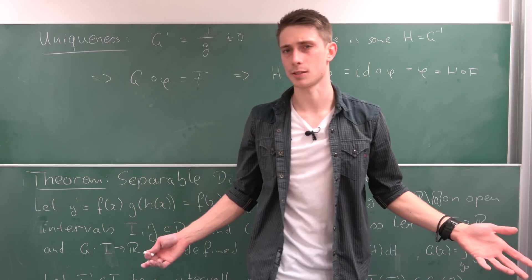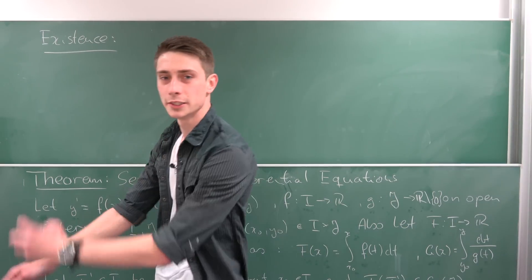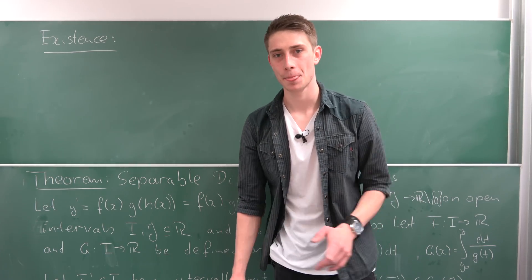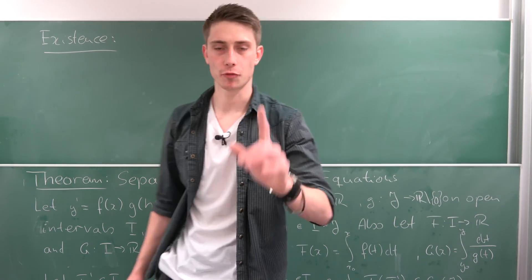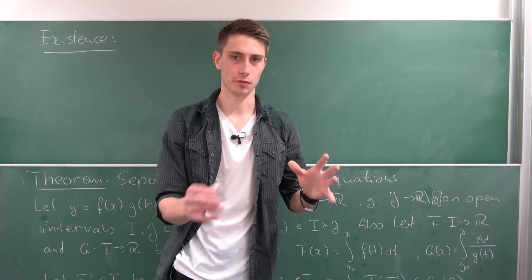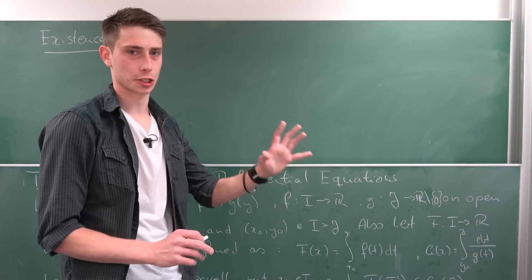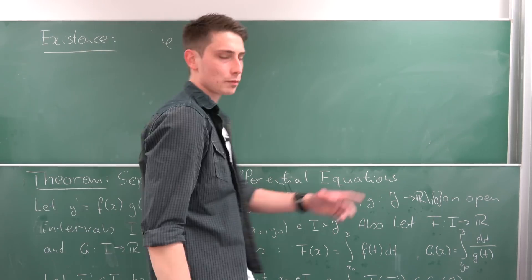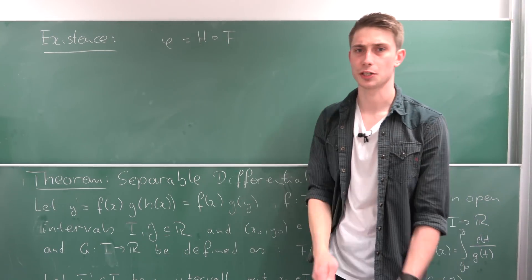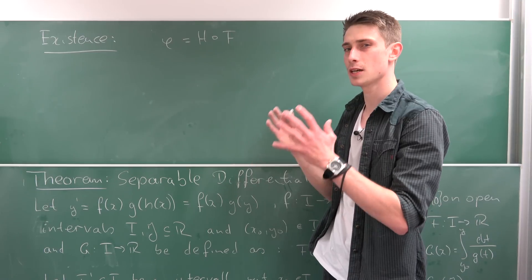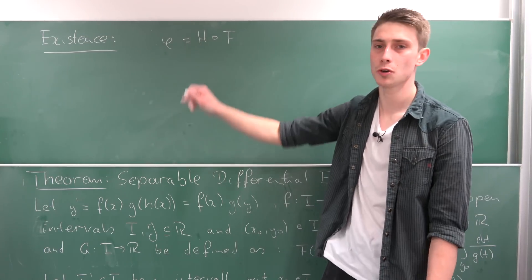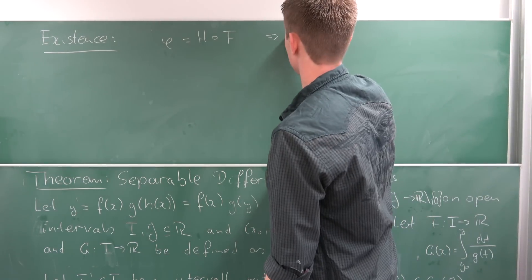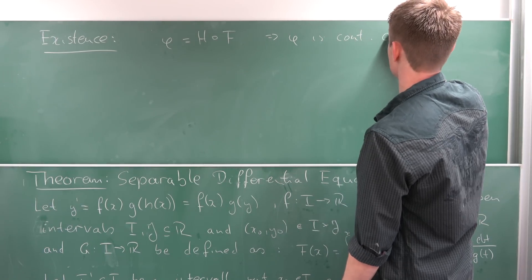And now for the existence. We know we have an inverse function H to the function G, and we can express every new solution phi as H composed with F. That's nice, because F is continuously differentiable, H is continuously differentiable, and that means phi is the composition of two continuously differentiable functions — which also means that phi is continuously differentiable.